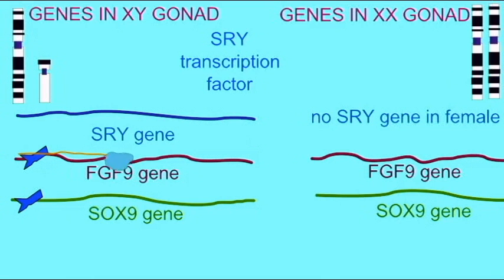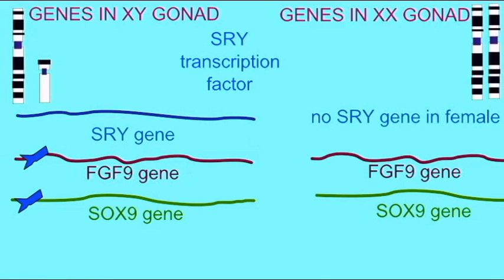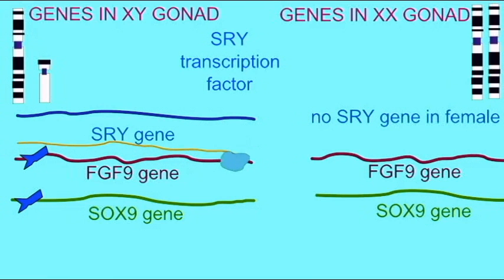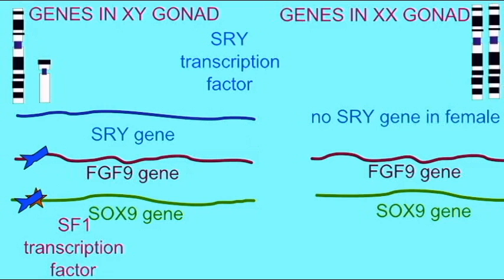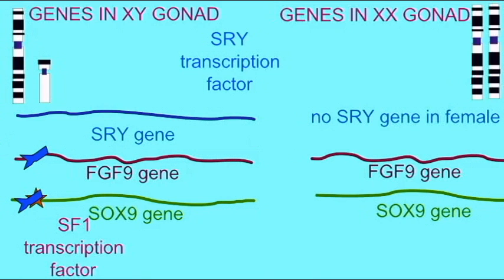While SRY may activate multiple genes, such as FGF9 — a gene required to allow cells of celomic epithelia and the mesonephros to migrate to the gonad — the major function of SRY is that it binds to SF1, and together they bind to a specific region of the SOX9 enhancer and turn on the transcription of the SOX9 gene.